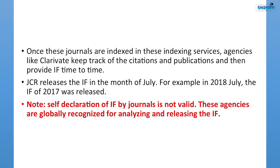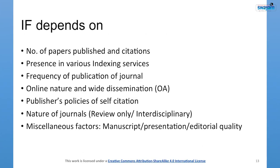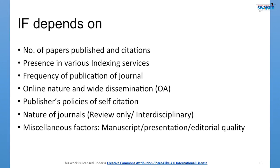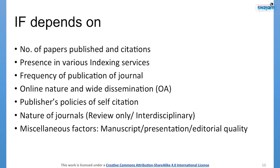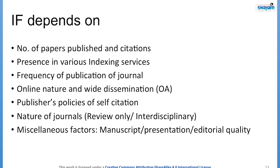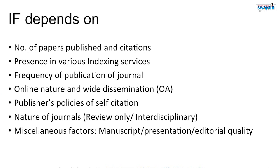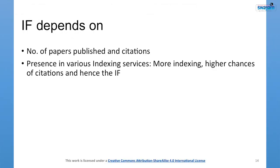Avoid those kinds of journals. Now let us discuss the factors on which impact factor is dependent. First: number of papers published and citations — by definition, impact factor depends on both directly. Second: presence in various indexing services — more indexing means higher chances of citations, which enhances impact factor. Third: frequency of publication — a journal published fortnightly publishes more papers and hence has a better chance of higher citations compared to quarterly, bimonthly, or monthly journals.